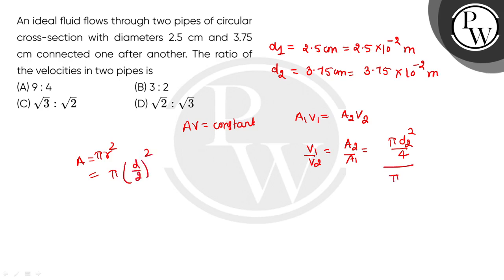V₁/V₂ equals (d₂/d₁)². Substituting d₂ value: 3.75 × 10⁻² divided by 2.5 × 10⁻² squared. This will cancel, the 10⁻² terms will go.